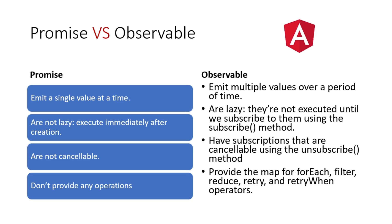Promise does not provide any operators on top of it, while Observable provides operators such as map, forEach, filter, reduce, retry, and retryWhen on top of it. That's the difference between Promise and Observable. In the next video we will see how to write HTTP services using Observable and how to use the subscribe method to get data from Observable.